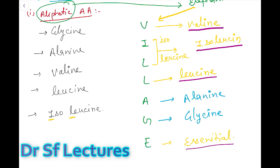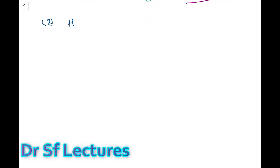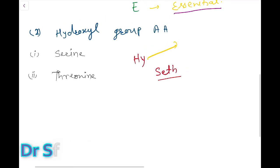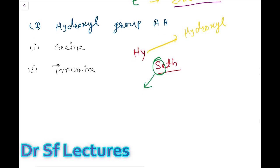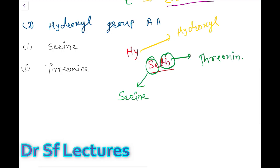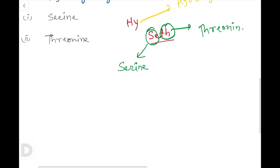The second group is the hydroxyl group amino acids. There are two amino acids here: serine and threonine. To remember this, use the mnemonic 'HAIR SET' — where 'HY' indicates hydroxy, 'SE' indicates serine, and 'TH' indicates threonine. The second amino acid group is done.